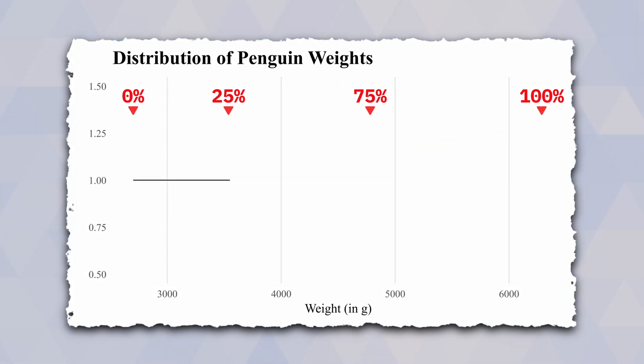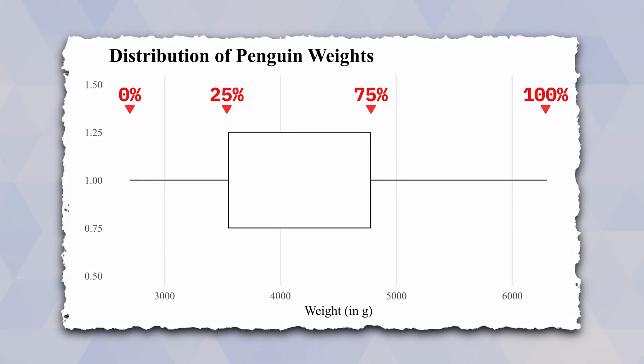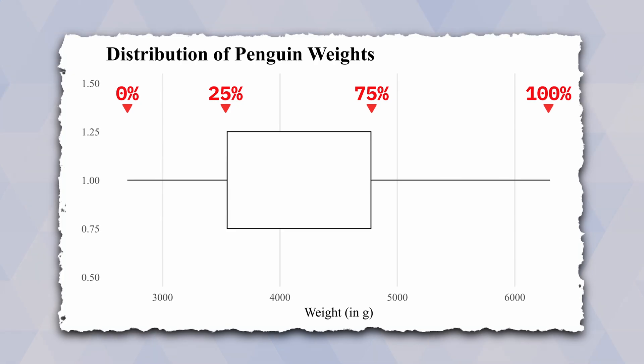First, you draw a line from the first to the second point, then you draw a box, and then you draw another line from the 75% point to the 100% point or the maximum.